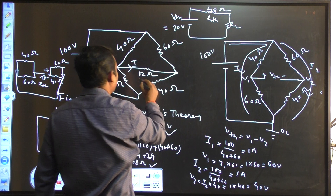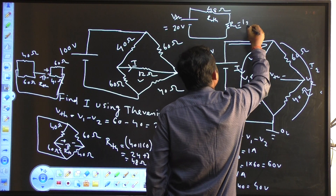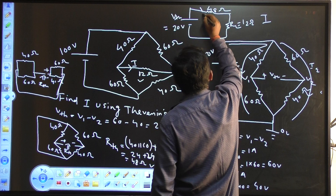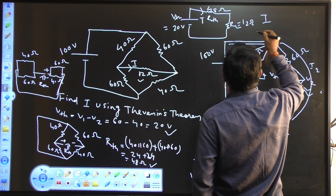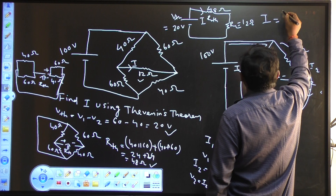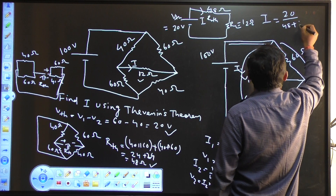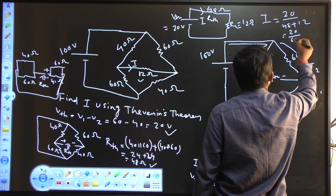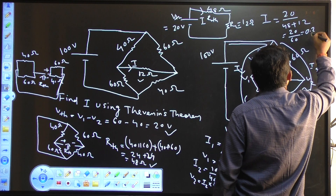Your RL is 12 ohm. So your current I will be 20 divided by 48 plus 12, this will come to 20 divided by 60, which is 1 by 3, equals 0.33 ampere.